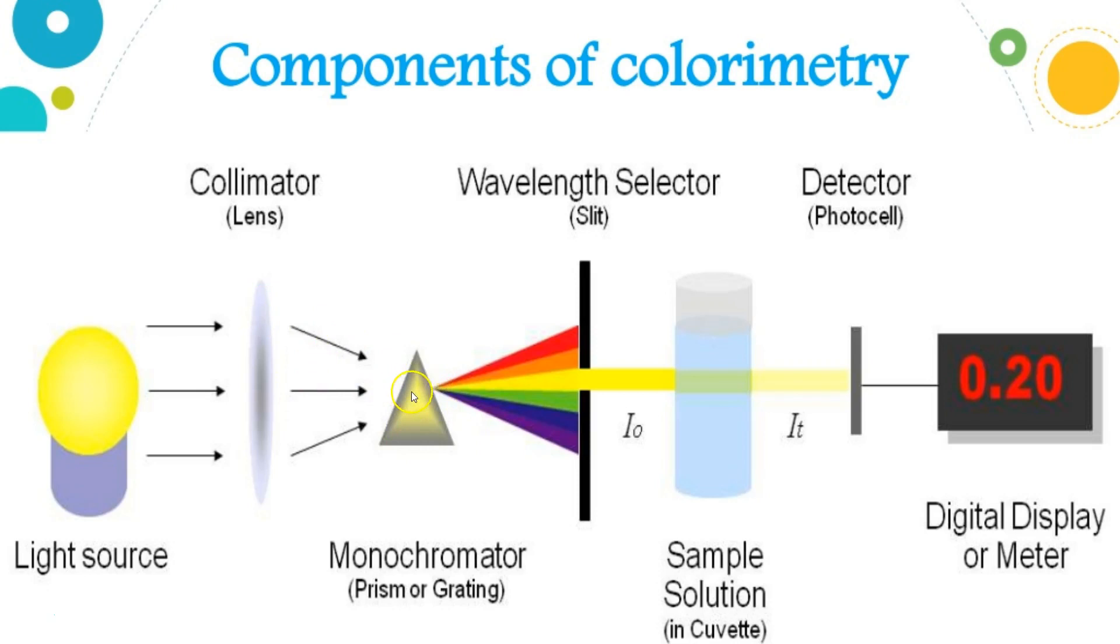The prism refracts the light and separates it into its visible wavelengths. We can see violet and blue and green and yellow, orange and red. Then there's a wavelength selector slit. On our colorimeter, there are four different buttons that you can push, and it changes the wavelength of light projected through our sample.